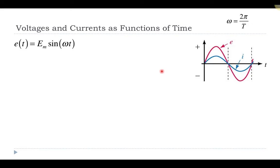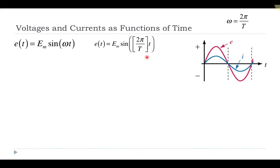This should make sense, because if we replace the angular frequency with 2π over the period, we get an expression that will be in radians when we plug in time. So if our period was in seconds and we plugged in a specific time, we would have the sine of some angle in radians.